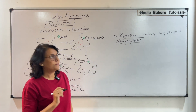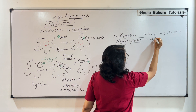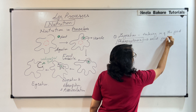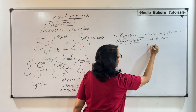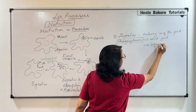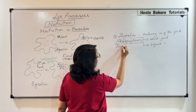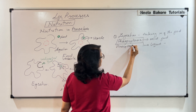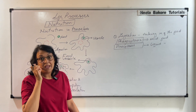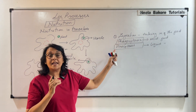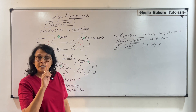Phagocytosis can be of two types. If solid food is taken in, we call it phagocytosis. If liquid food is taken in, the process is known as pinocytosis. So the cell is taking in either a solid particle or a liquid particle — the food is being taken in. This is step number one.